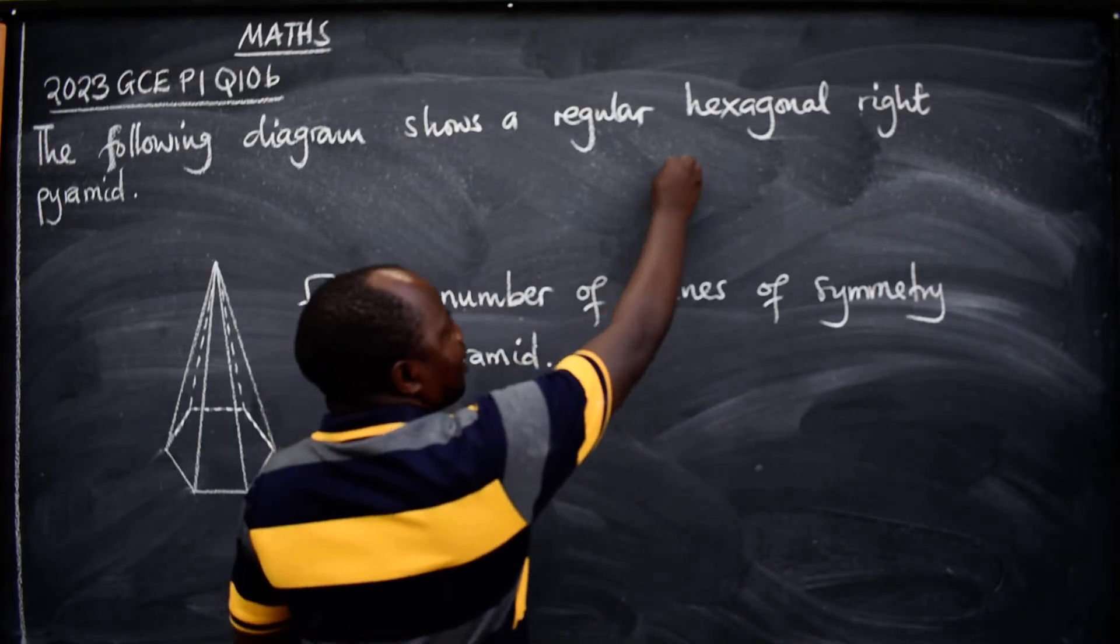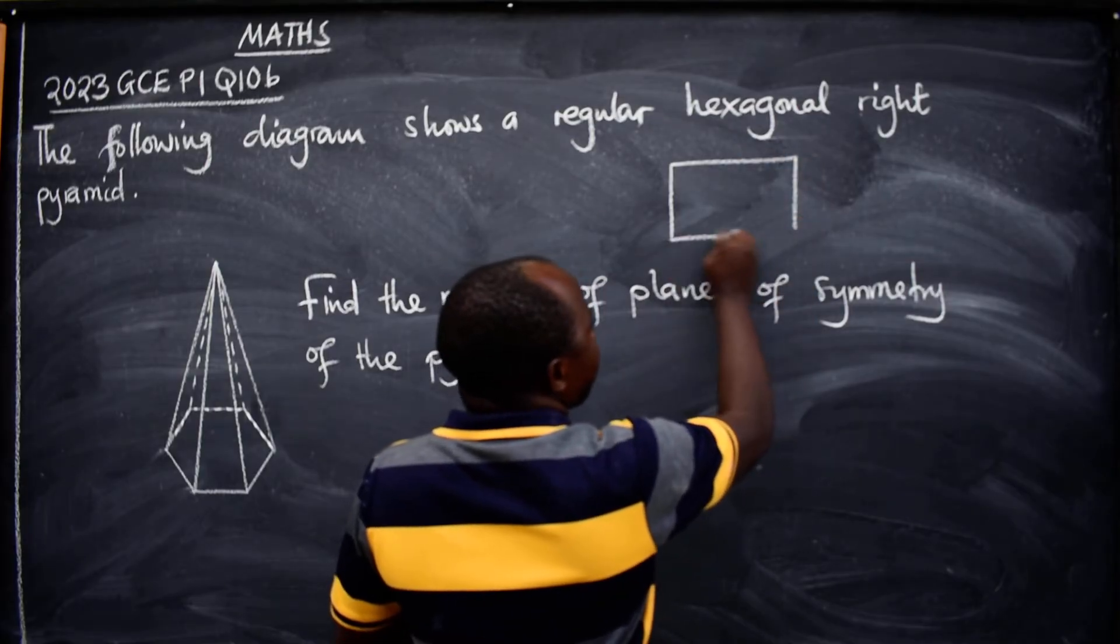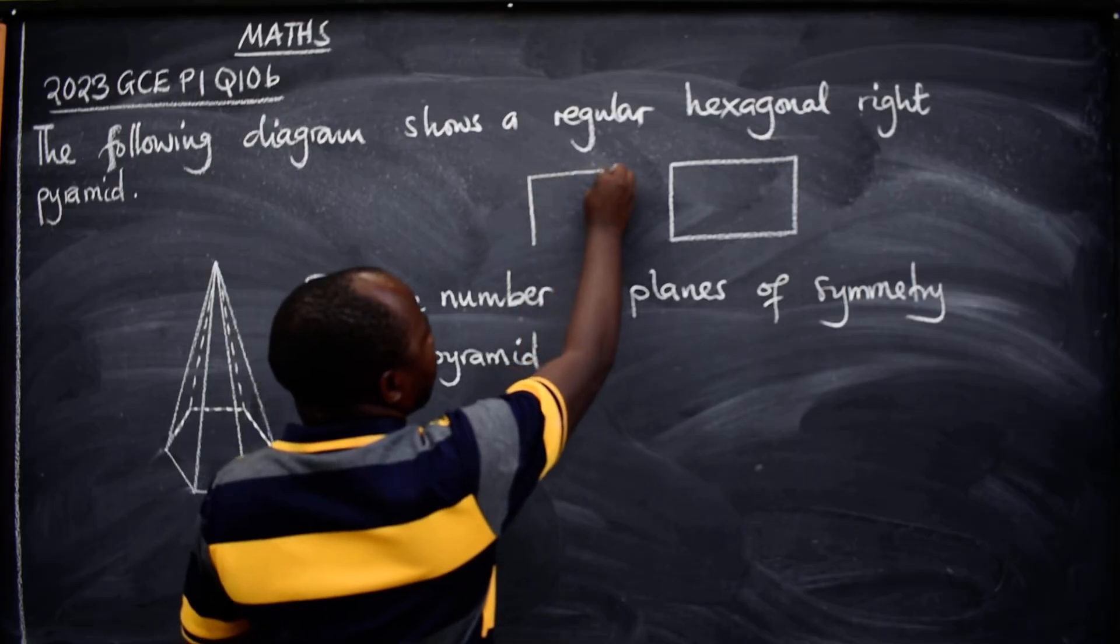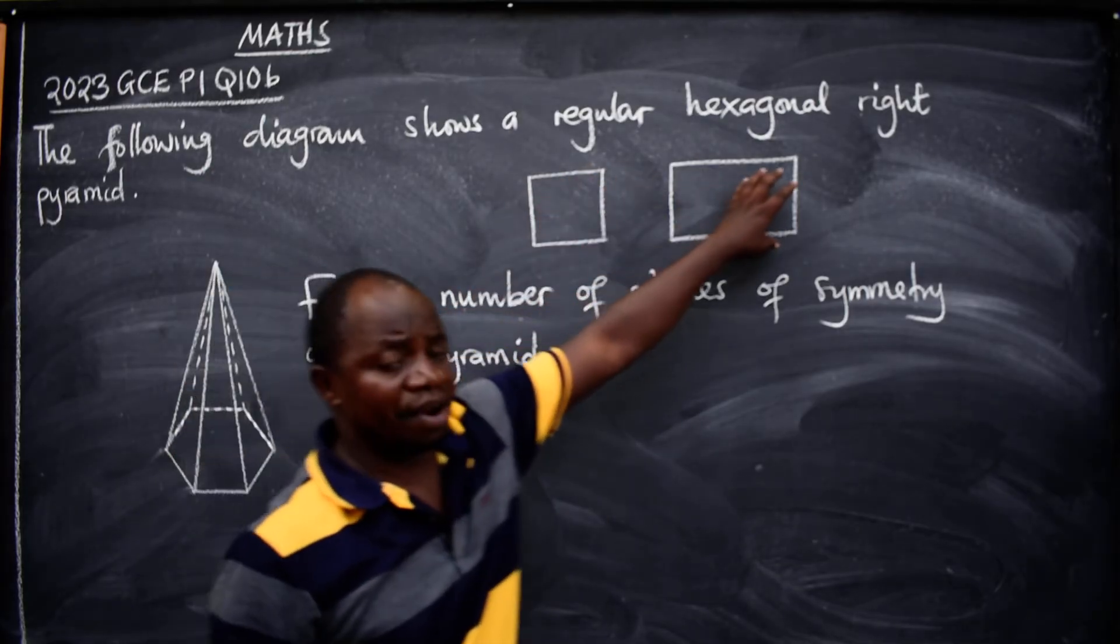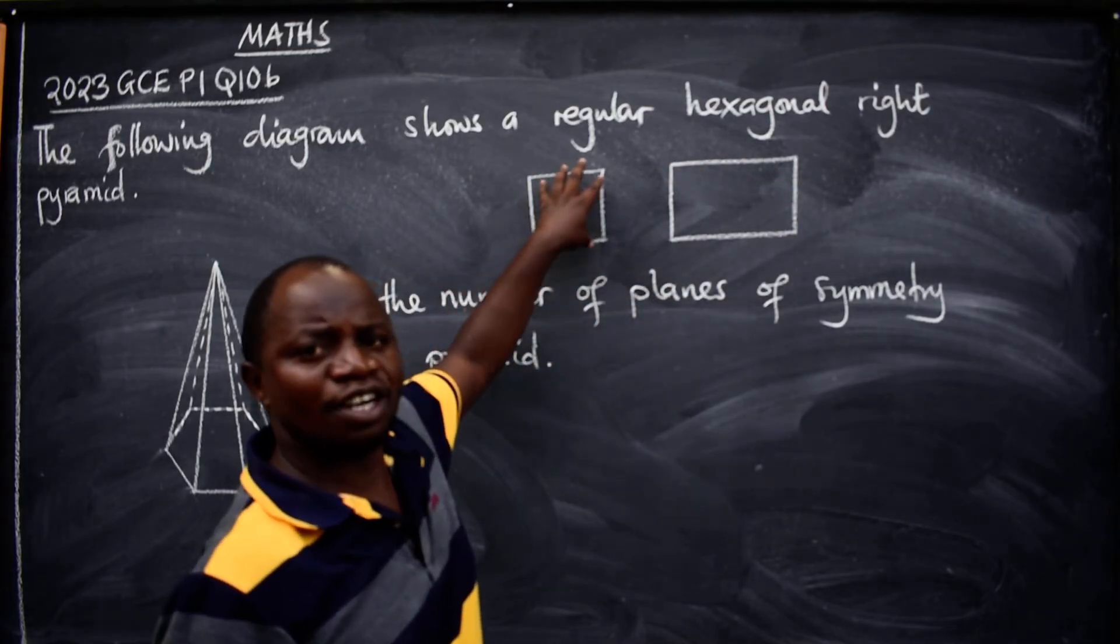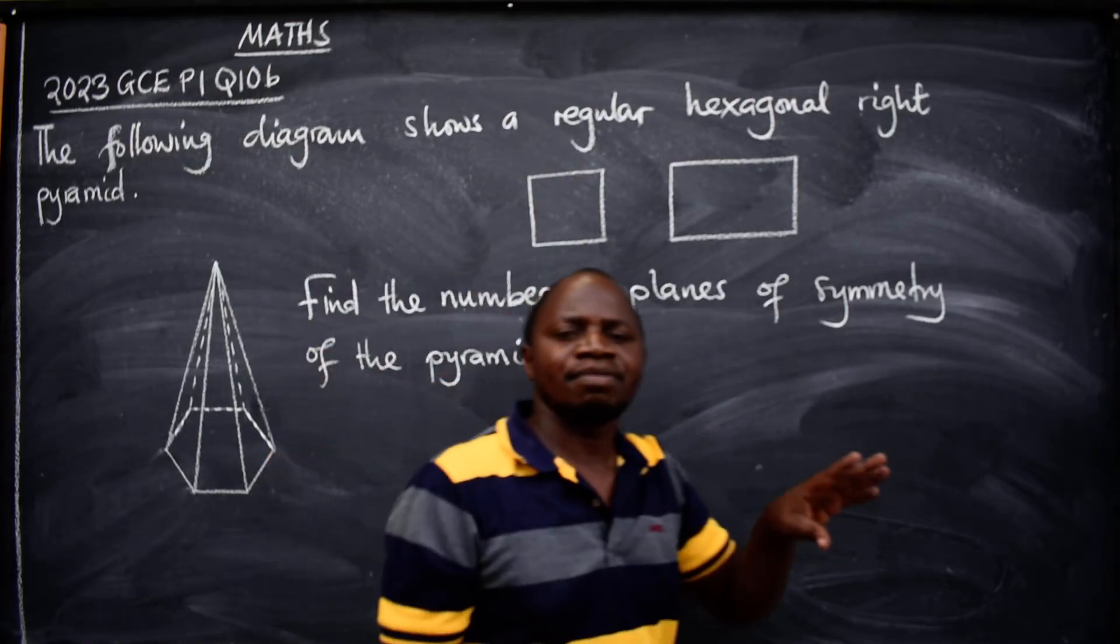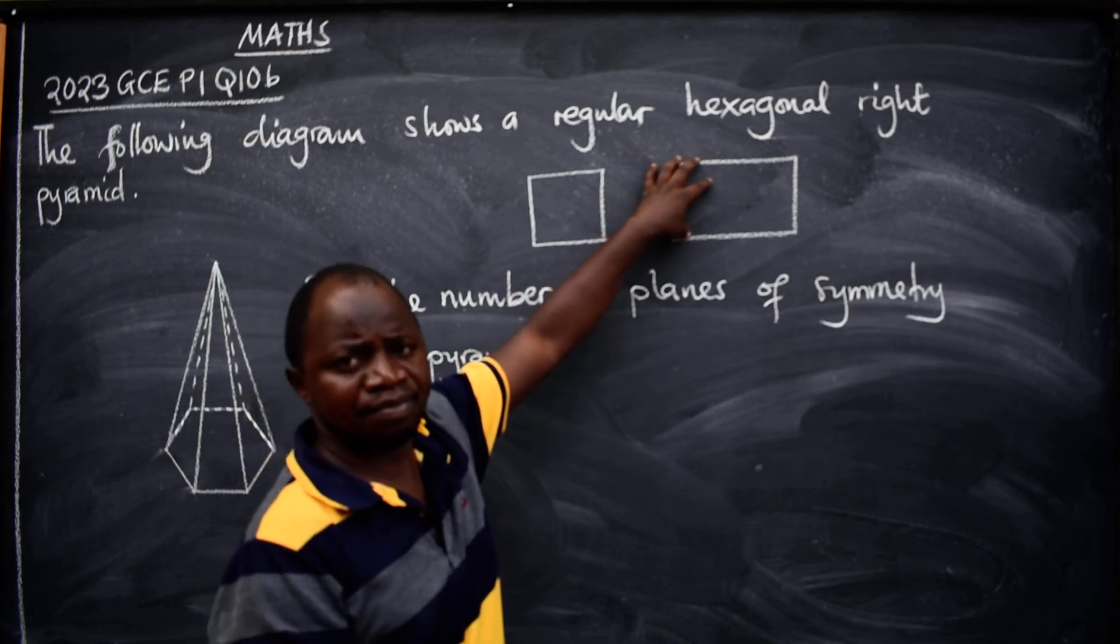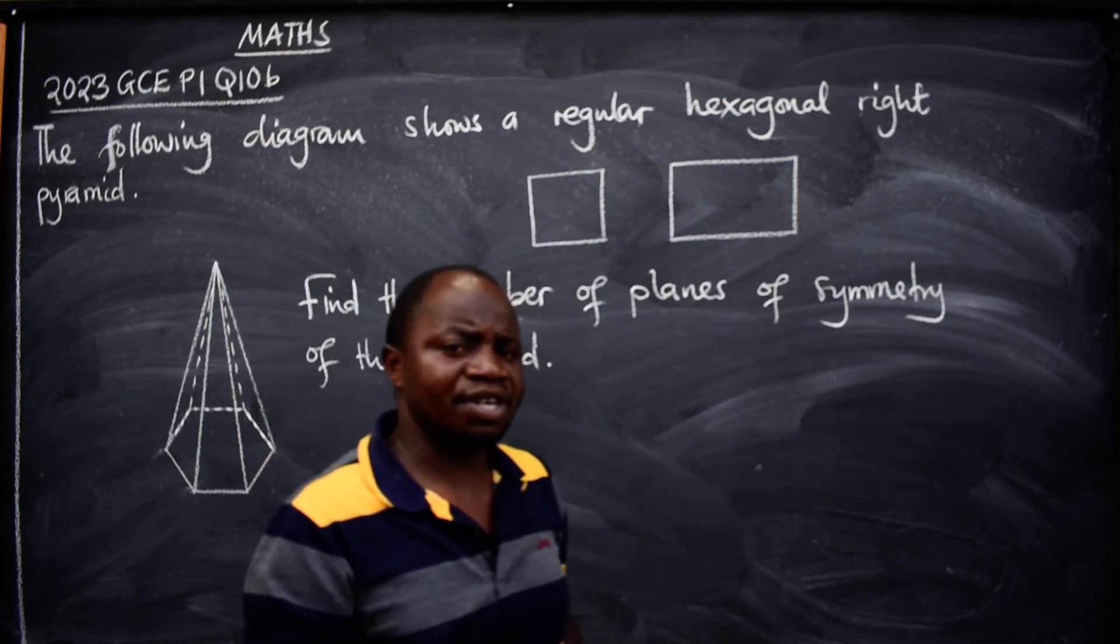Now when I have been given a 2D object like this, and another one is here, this is the square, this is the rectangle, agreed. Here I can only be asked to find or to state the number of lines of symmetry of this shape since it is 2D. So in 2D we use line of symmetry, but in 3D we say planes of symmetry.